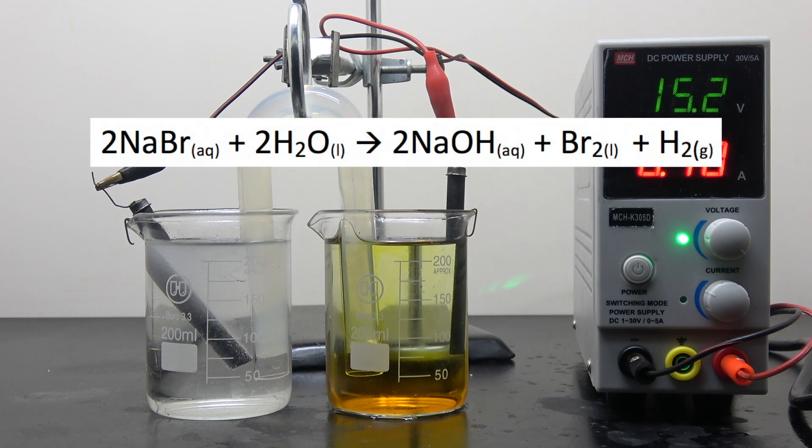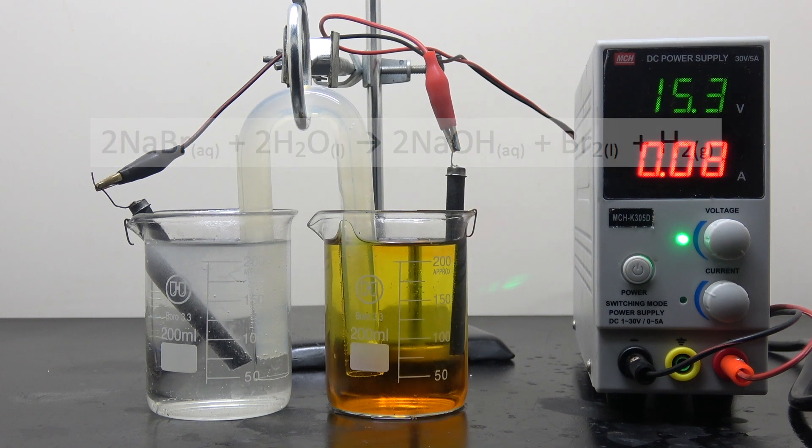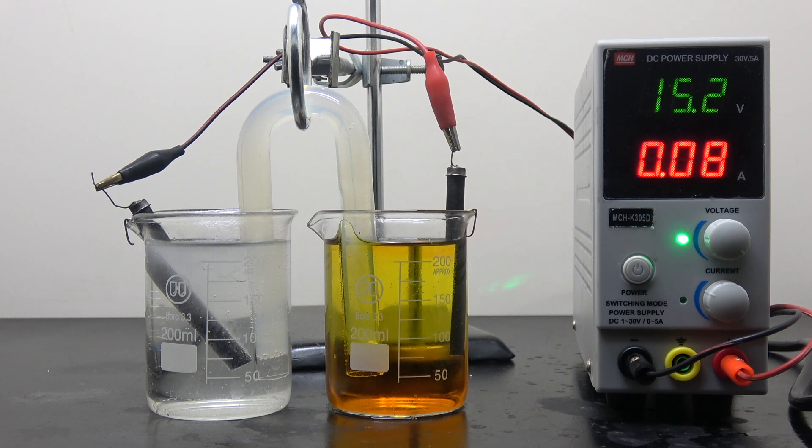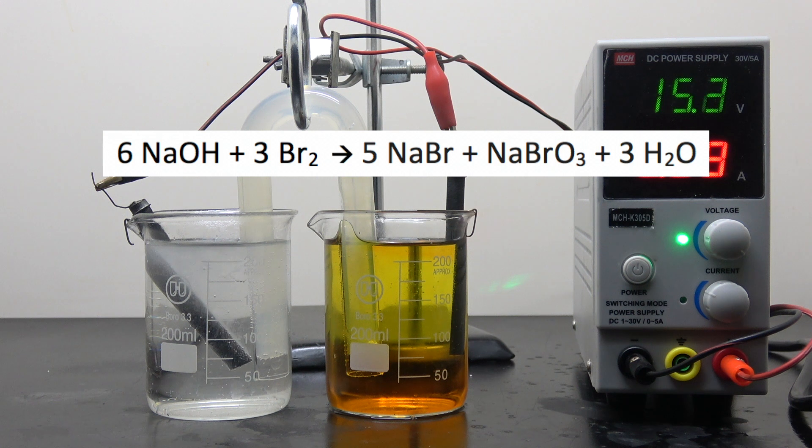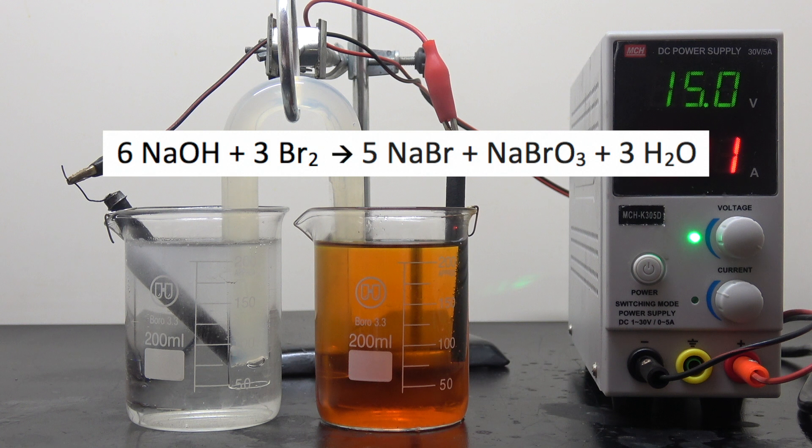So overall, for every two moles of sodium bromide, we get one mole of bromine. However, this would be very problematic if the reaction is done in a single cell, as the bromine will react with sodium hydroxide to form back sodium bromide, sodium bromate, and water. This reaction is a good way to make sodium bromate. In our case, it is totally undesired.